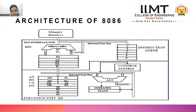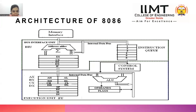From the instruction queue, instructions go to the control system. The control system decodes the instruction from assembly language into machine language that the processor can understand. According to that machine code, control signals are generated and spread throughout the circuit. The decoded instruction is then fed into the ALU and the execution unit.